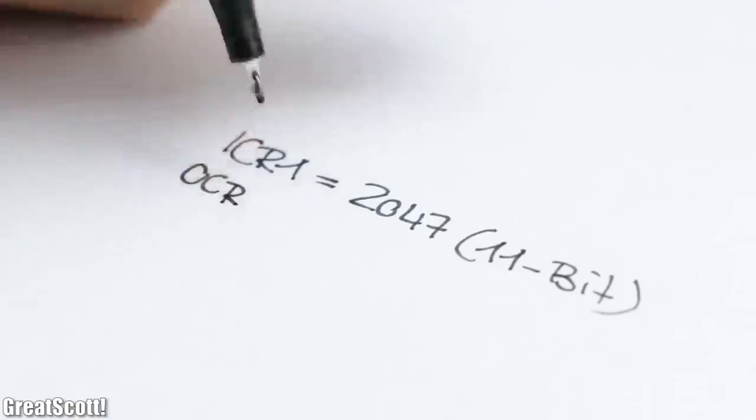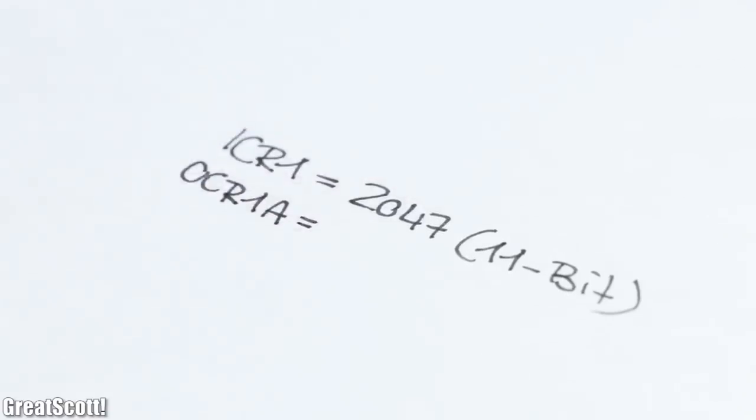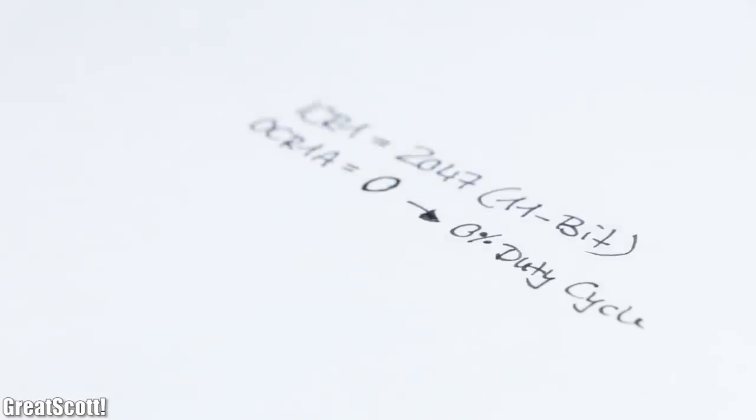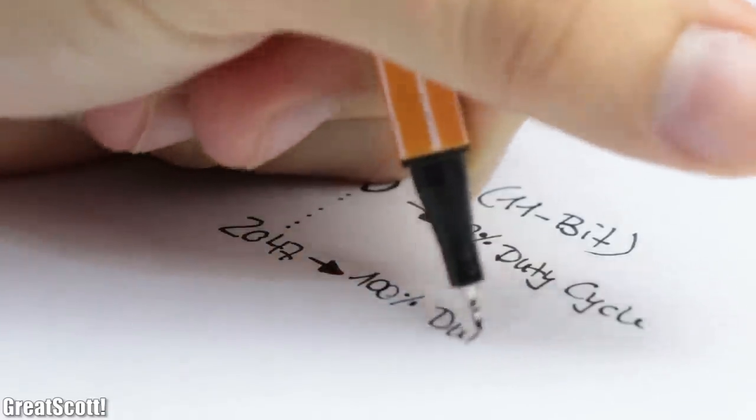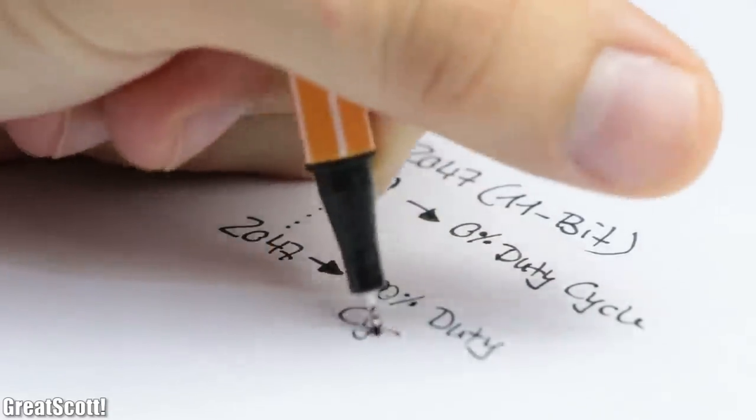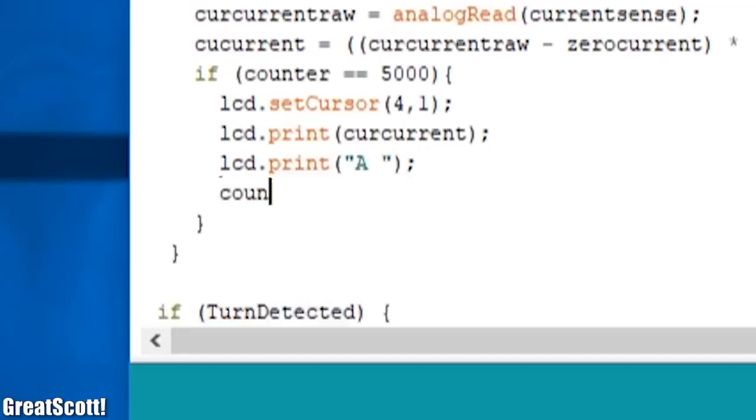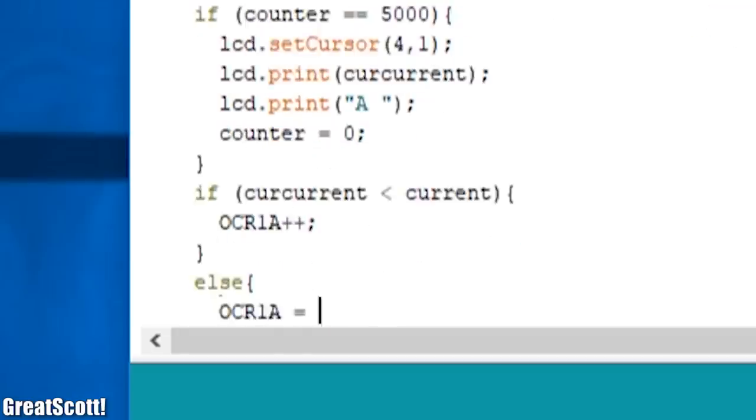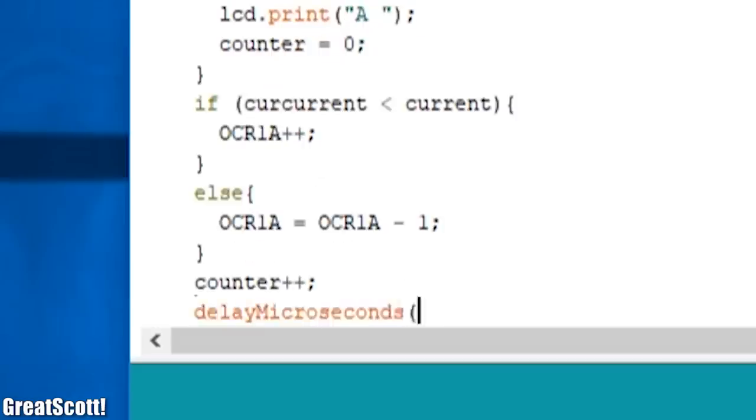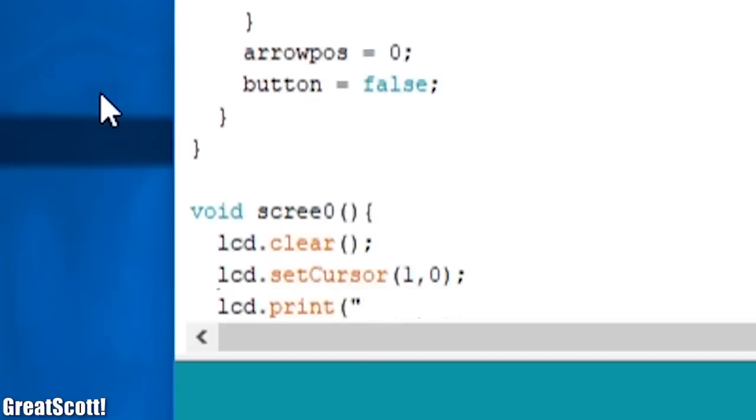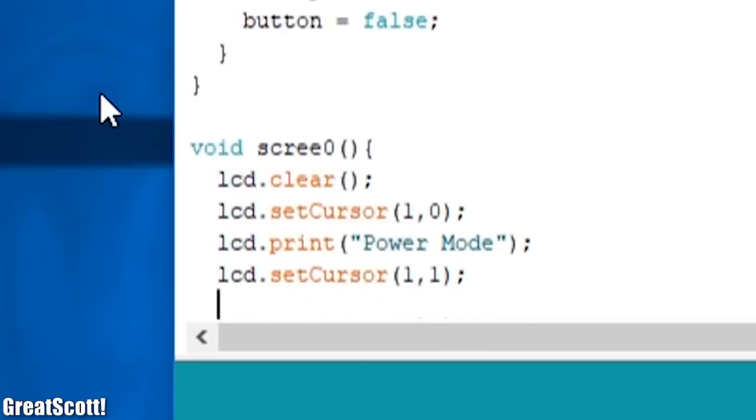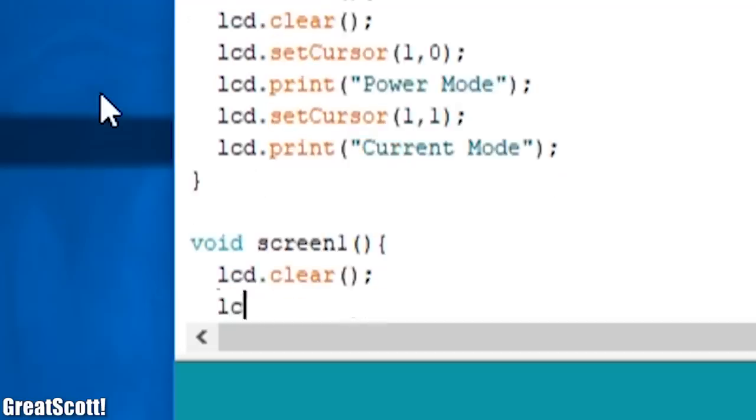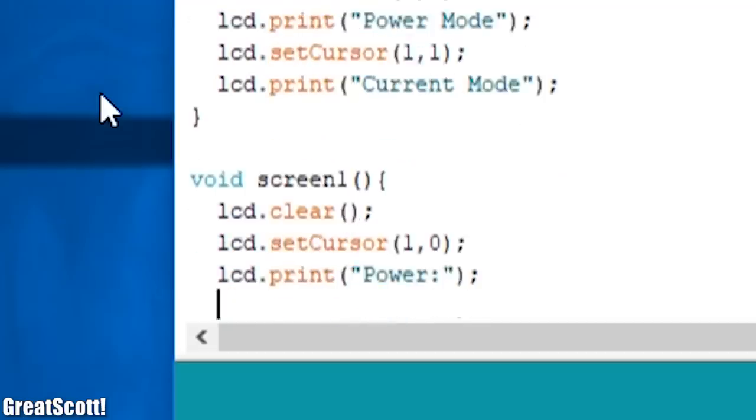Its duty cycle is represented by the OCR1A value with a 0% duty cycle for the value 0 and 100% duty cycle for the value 2047. When the power or current mode is then activated, this value increases or decreases depending on the measured values. But there is a lot more going on in this code than just that, so feel free to download it through the link in the video description so that you can go through it line by line.